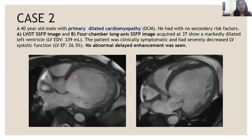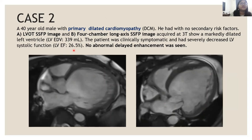The next case is a 40-year-old female with primary dilated cardiomyopathy and no secondary risk factors. The LVOT-SSFP image and 4-chamber long-axis SSFP image show a markedly dilated left ventricle with an end-diastolic volume of 339 ml. This patient had severe systolic dysfunction with an ejection fraction of only 26.5%, but on post-contrast imaging, no abnormal delayed enhancement was seen.